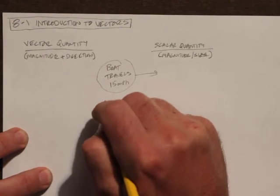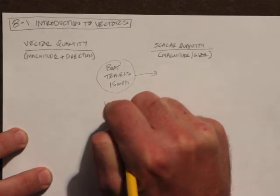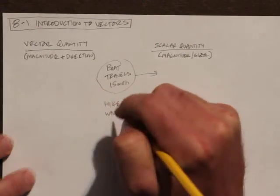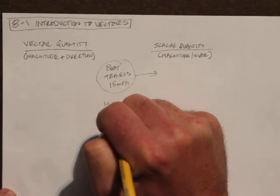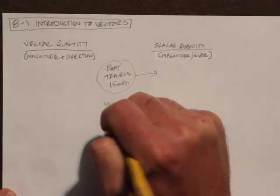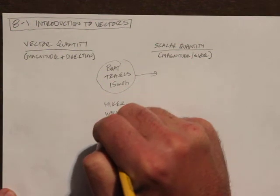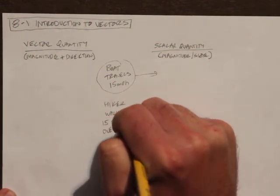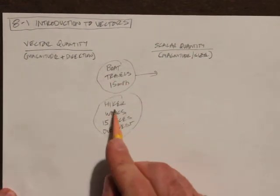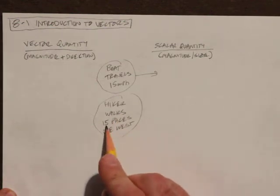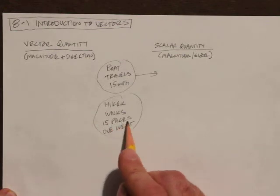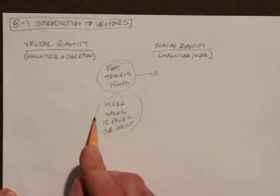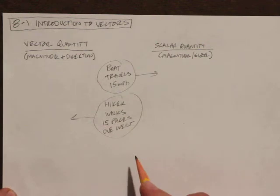Let's look at another one: a hiker walks 15 paces due west. We have a hiker walking 15 paces — that's the magnitude — and a direction: due west. So this is a vector quantity.